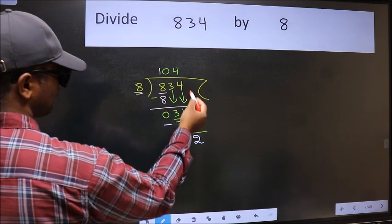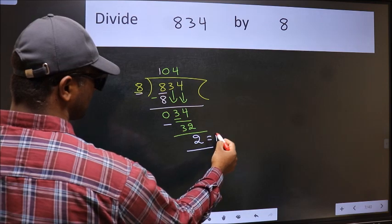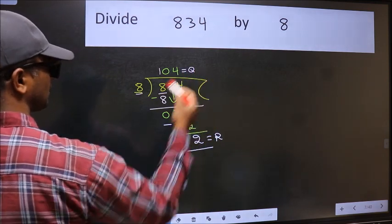No more numbers to bring it down. So we stop here. This is our remainder and this is our quotient.